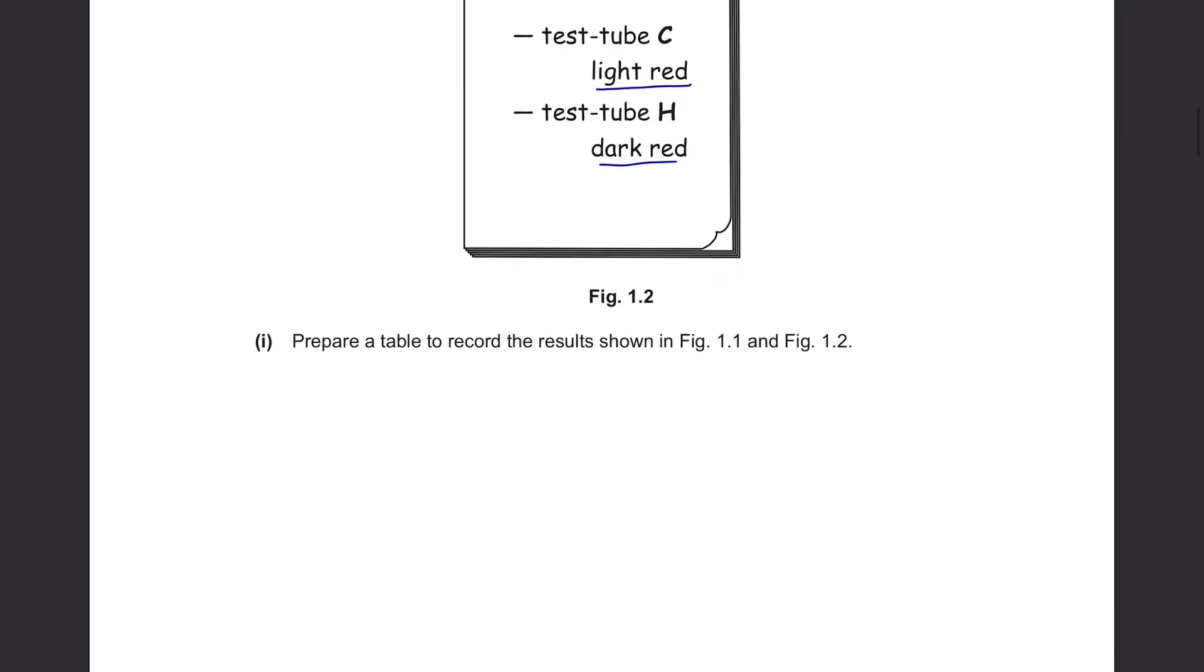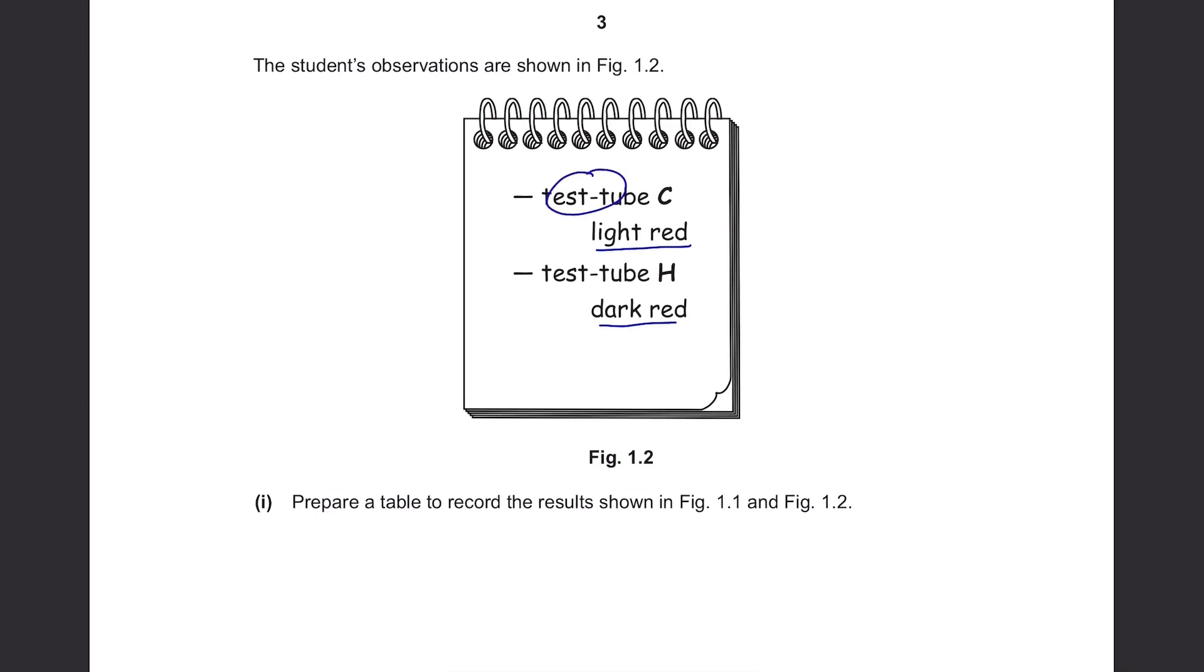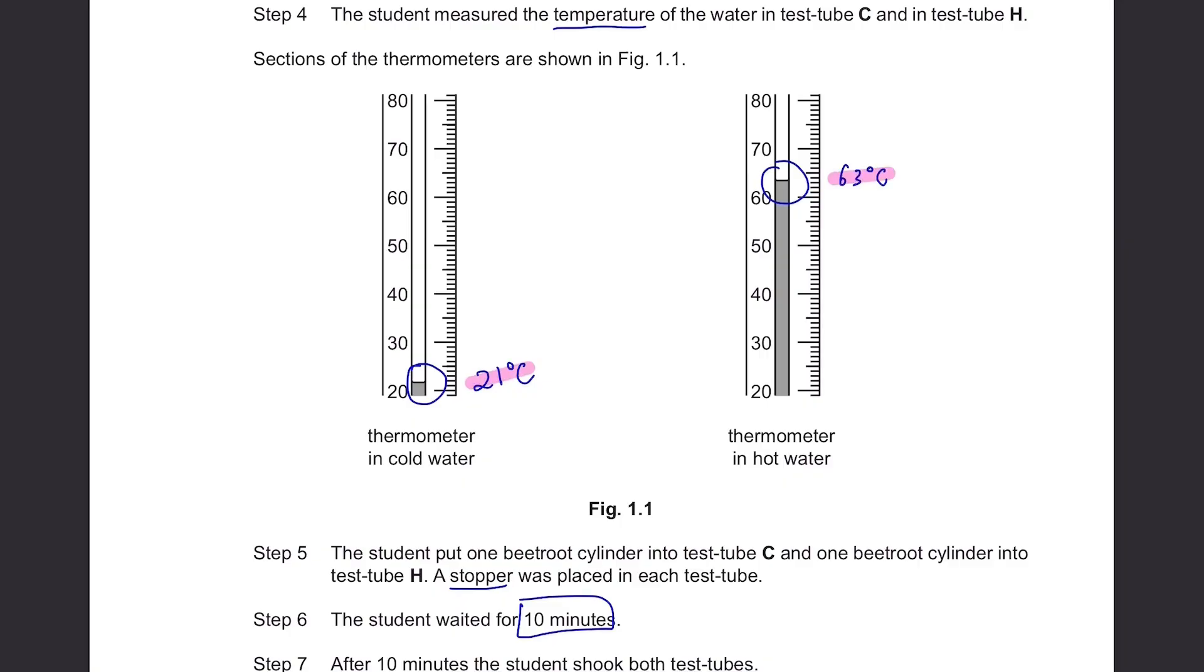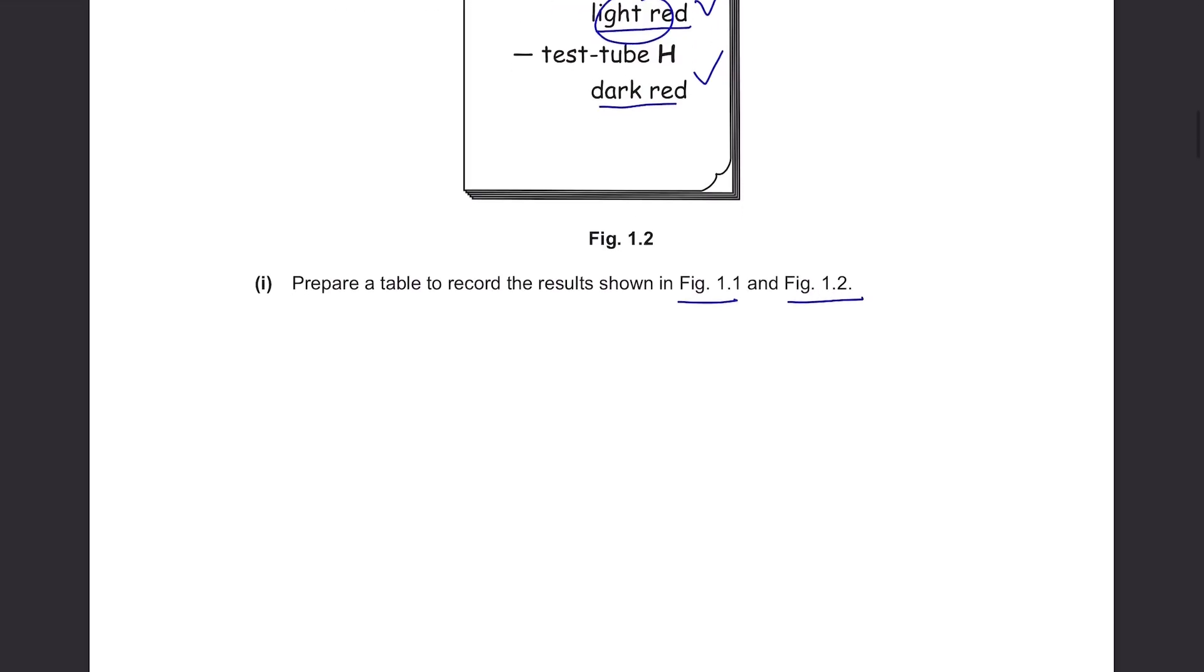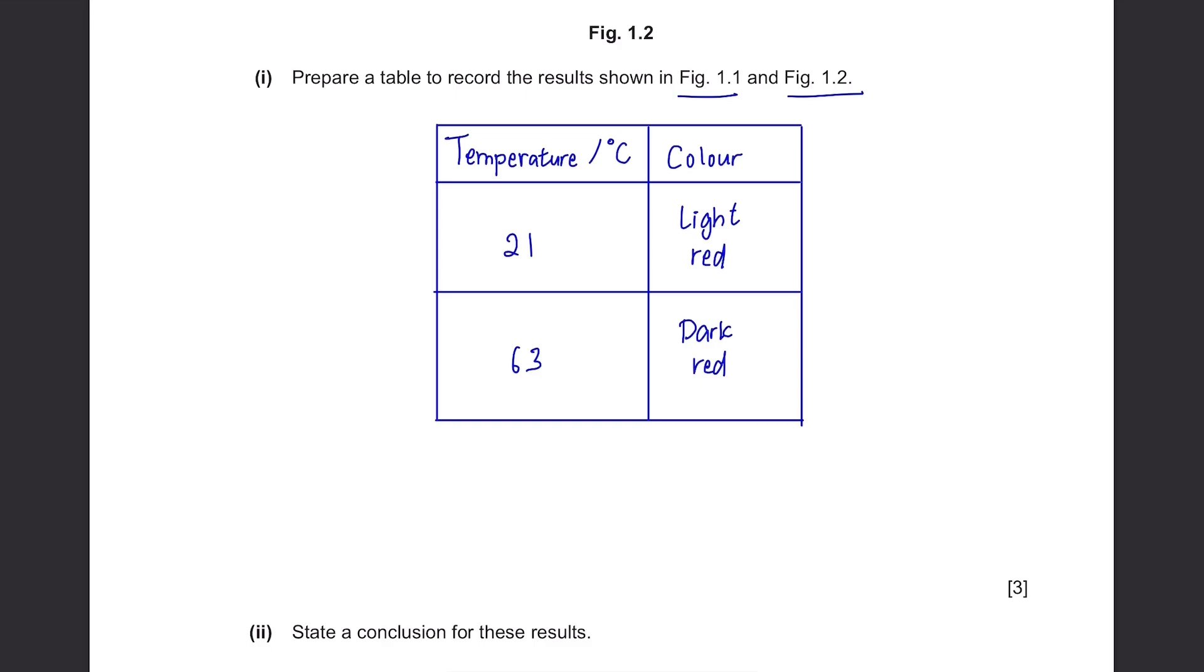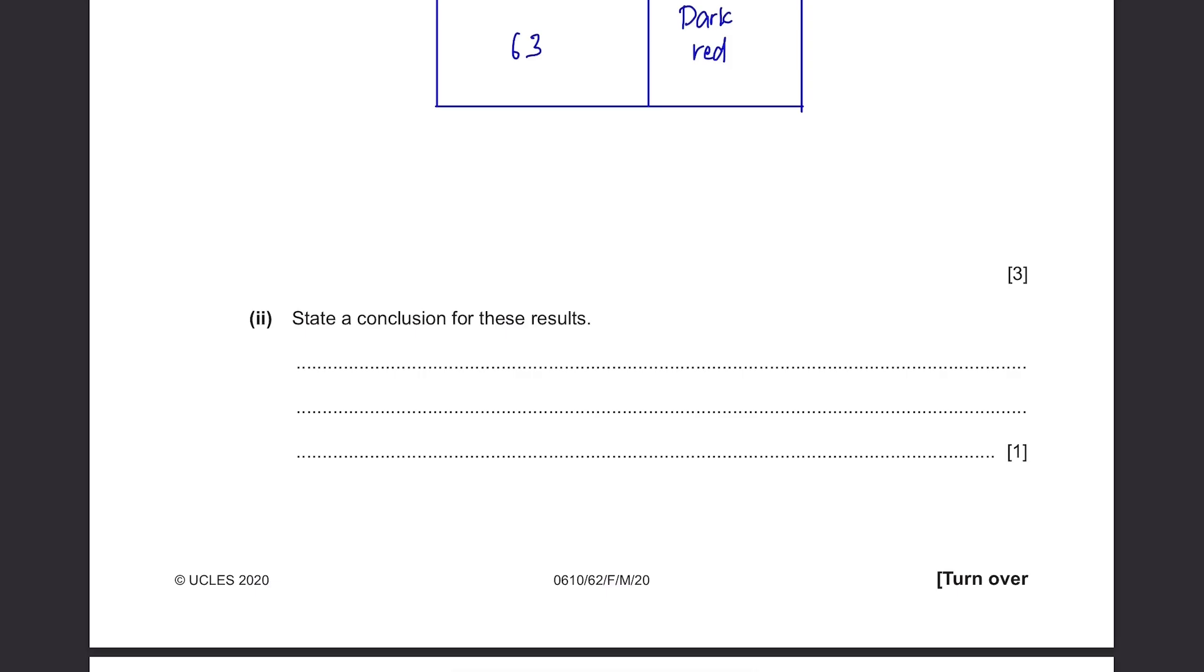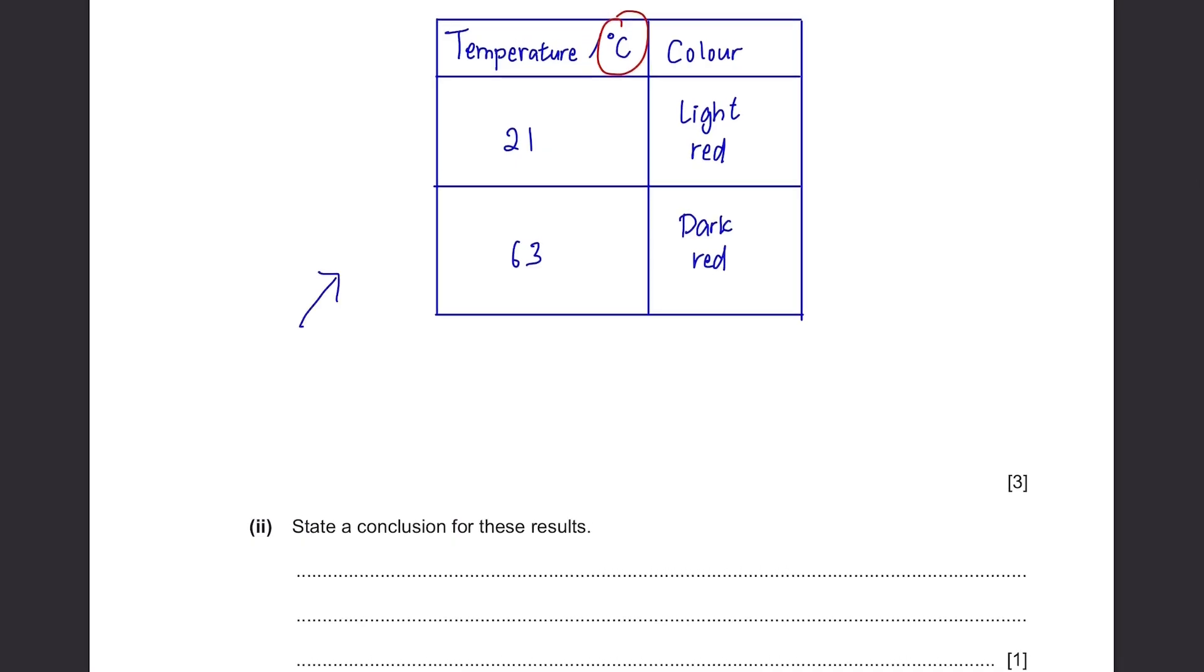Prepare a table to record the results shown in figure 1.1 and figure 1.2. You might get confused and draw a table with a column heading of test tube and the color, but no. They said use the results shown in figure 1.1 and 1.2. So one column should be from 1.1, which are these, the temperatures of the water used. And then the second column should consist of the color change. You don't need a column for the test tube C and H because that's just represented by the different temperatures. Don't forget to include the unit in the column heading. State the conclusion for these results. For these kind of questions asking for conclusion, you have to describe what you see in the table. At higher temperatures, the color is darker, meaning more pigment is leaked at higher temperatures.